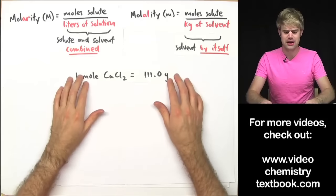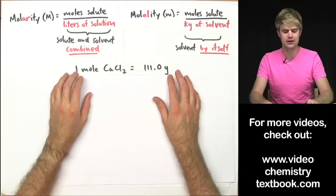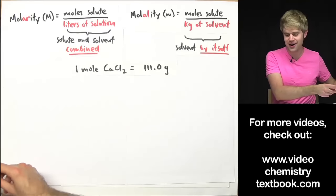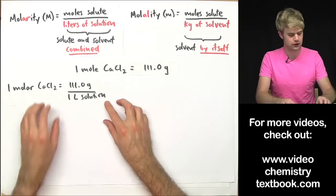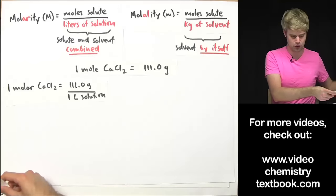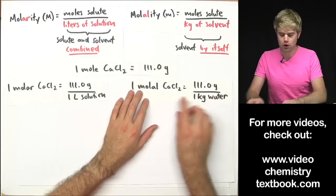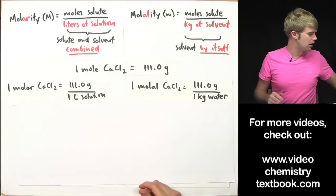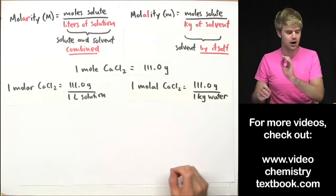Let's talk about making a molar and a molal solution of calcium chloride which has a molar mass of 111.0 grams. So to make one molar solution of CaCl2, I'll take 111 grams and dissolve it in one liter of solution and to make a one molal solution of calcium chloride I'll take that same 111 grams and dissolve it in one kilogram of water.